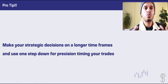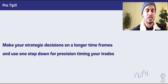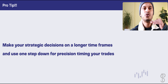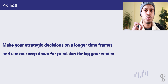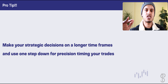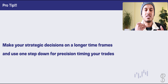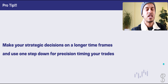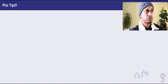Always make your strategic decisions on a longer time frame, and use one step down to precision-time your entry. For example, if the daily time frame is your bread and butter, you look at the hourly to time your buy and sell entries, but track the stock on the daily. If weekly is your preferred approach, use the daily to buy and sell. This is what professional traders generally use to make their decisions.